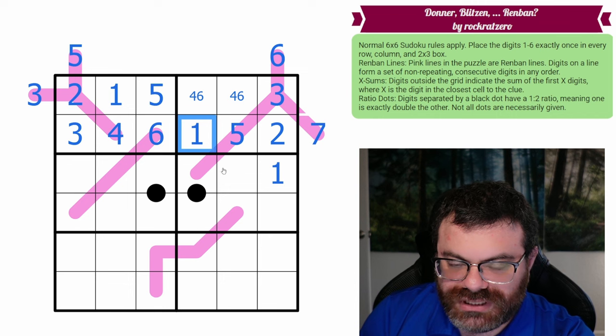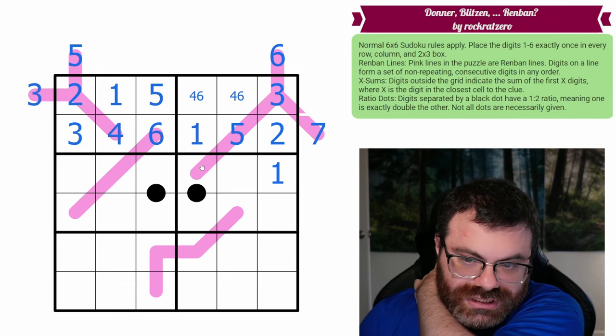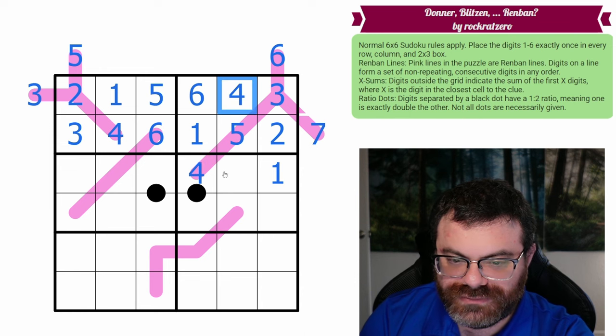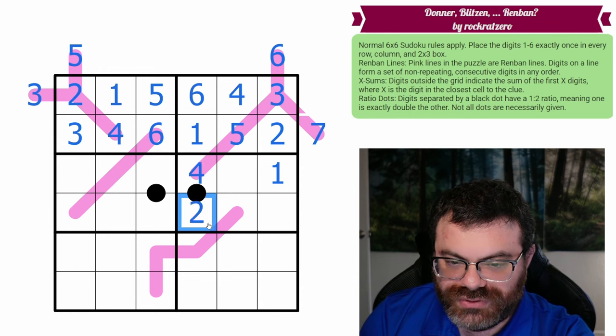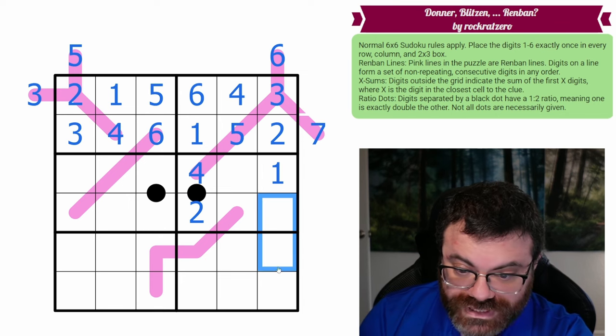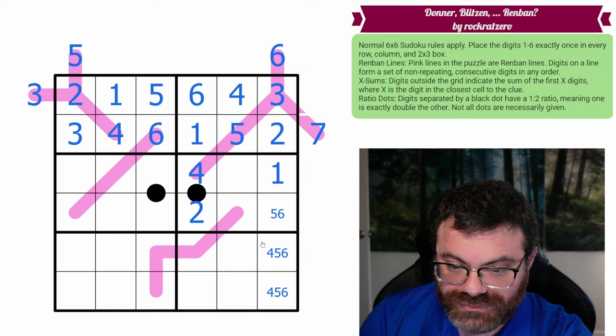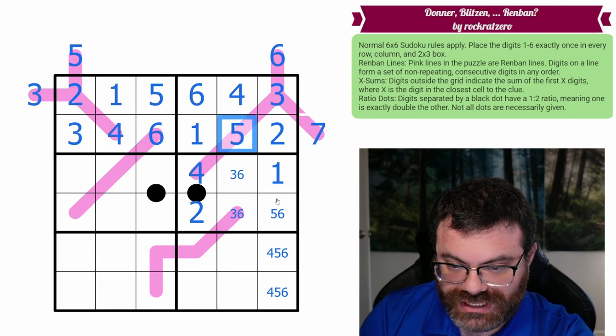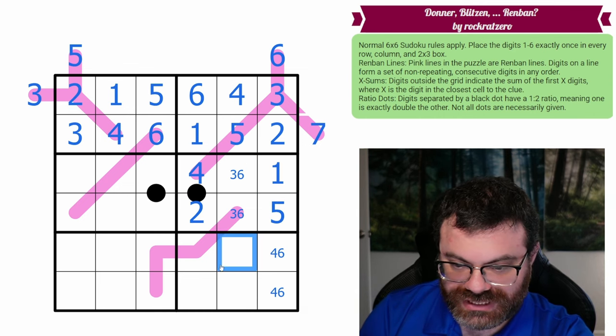So this is a 1 for the box. This is just known. This has to be the 4 to bridge the gap here. That's 6 and 4. 4 goes with 2 only on a black dot. These are from 4, 5, 6. That's not a 4. These are from 3, 5, 6. That's not a 5, so that's the 5. These aren't 5.